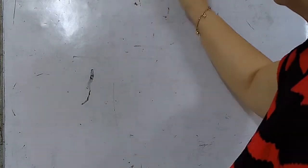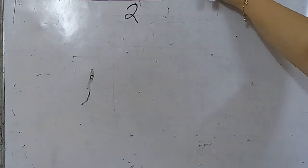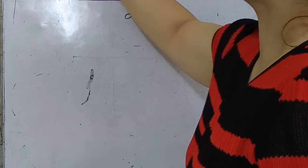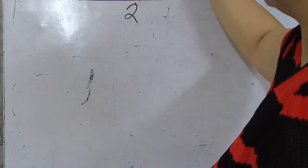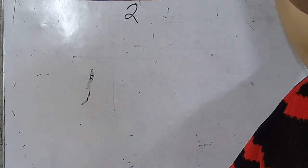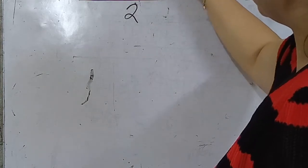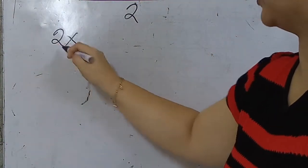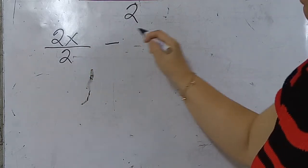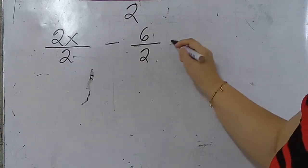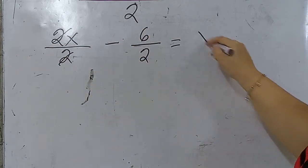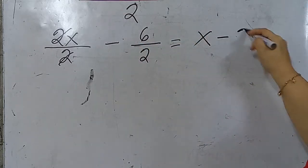There is another method in dividing a polynomial versus a polynomial. Last time we had 2x over 2 minus 6 divided by 2. If you want to divide, 2x divided by 2 is x, minus 6 divided by 2, which is 3.